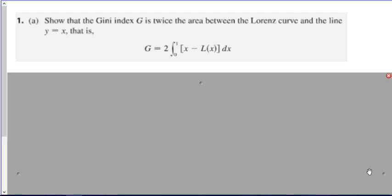Number one, part A, show that the Gini index, G, is twice the area between the Lorenz curve and the line Y equal X. That is, G equal 2 times the integral from 0 to 1, X minus L of X, integrated with respect to X. Where, of course, L of X is the Lorenz curve.